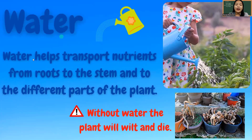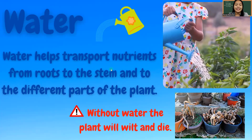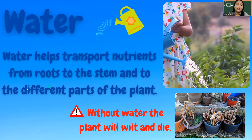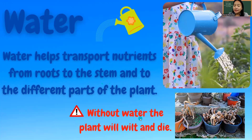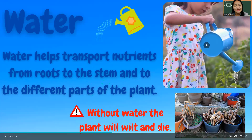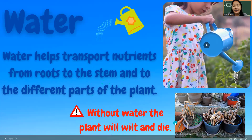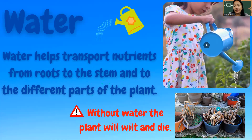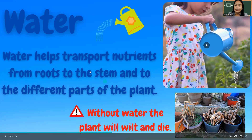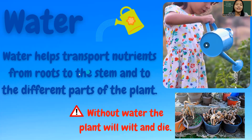Plants need water. Water helps transport nutrients from the roots to the stem and to the different parts of the plant. Without water, the plant will wilt and die. Just like us, plants also need water. If we are not going to water our plants, they will eventually wilt, and if it continues to have no water at all, they will die. So we need to water them every day. The second need of a plant is water.